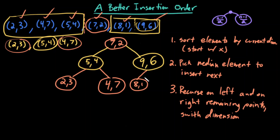In general, with a k-dimensional tree, I would start with the first dimension. When I recursively call the same algorithm on the left and right halves, I move to the next dimension — the (k+1)th dimension. With three-dimensional data, I start with x, then recurse using y, then z, then x again, then y, then z, and so on. For any arbitrary k-dimensional data, whatever coordinate I'm looking at now, I recurse using the next coordinate and wrap around when there are no more dimensions left.